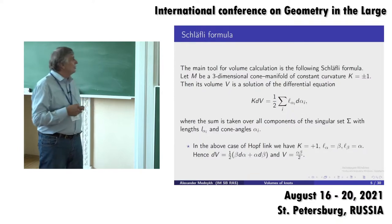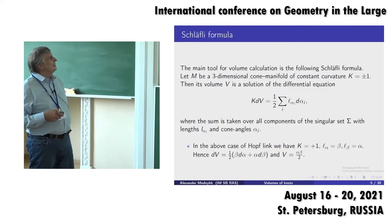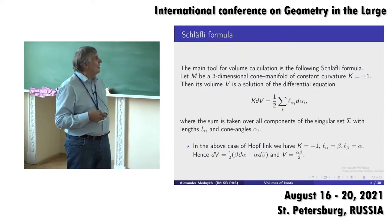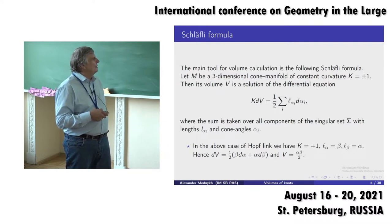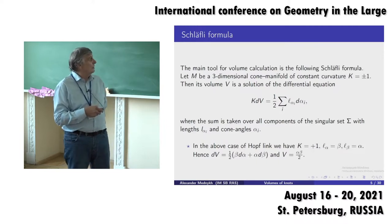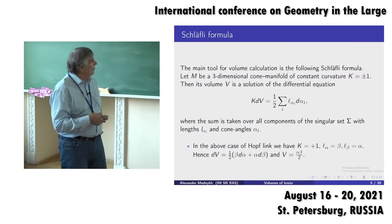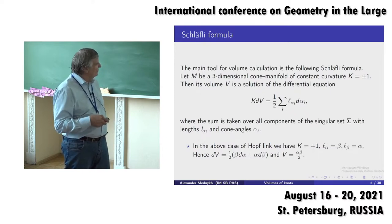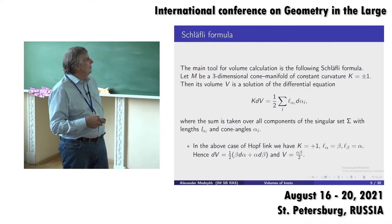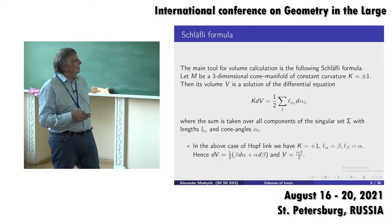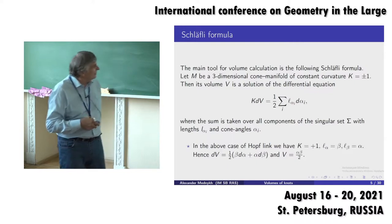To do volume calculations in hyperbolic and spherical spaces, we use the so-called Schlafli differential equation. With K being the fixed curvature, the differential of the volume of the cone manifold is given by a very simple expression: we take a sum over all components of the singular set of L_α — the length of the edge with total cone angle α — times the differential of α. To find the volume formula, we just integrate this differential form, which is easy to write down but quite difficult to evaluate explicitly.